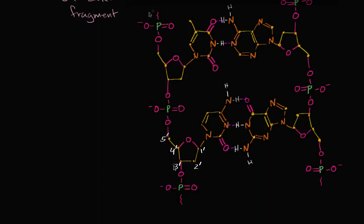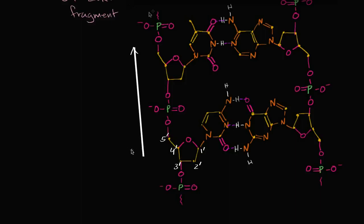So this side of the ladder is going in the three prime to five prime direction. This end is three prime, and then this end is five prime — it's going three prime to five prime.